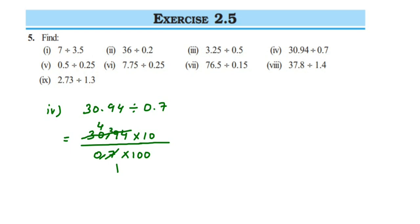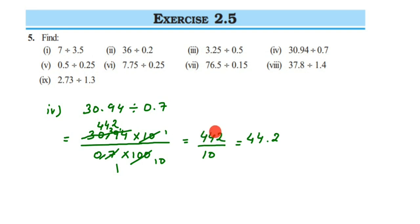After cancellation of 7 and 3094 we get 442, and cancelling 10 and 100 leaves 10 in the denominator, giving 442 upon 10. Converting to decimal: dividing by 10 moves the decimal one place left, so 442 divided by 10 is 44.2. The answer is 44.2.